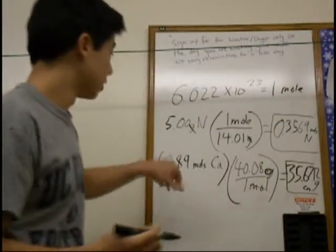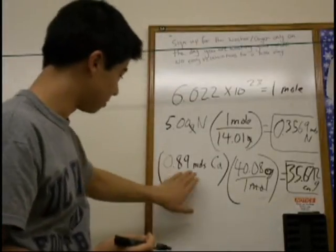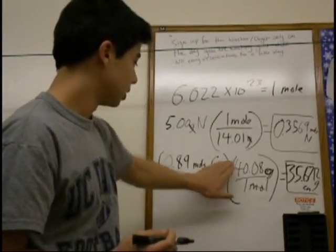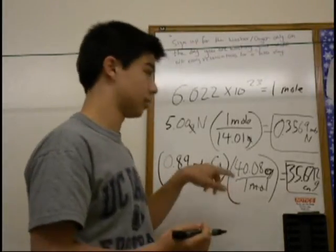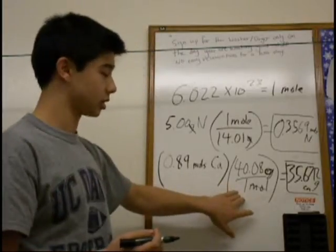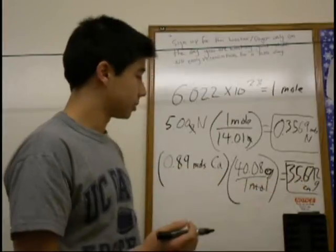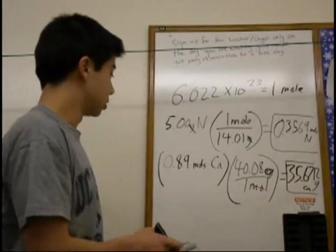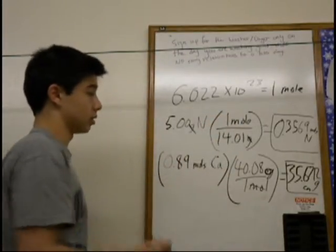So, here, we did the opposite of this. We converted from moles, 0.89 moles of calcium, used the molar mass by finding the atomic mass on the periodic table, and then converted into grams. So, as you can see, you can use the molar mass to convert to moles and to grams, which is very useful.